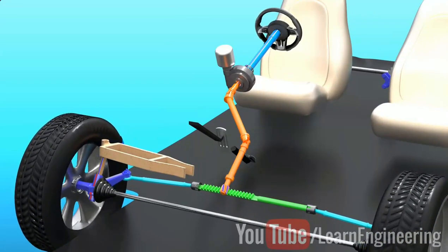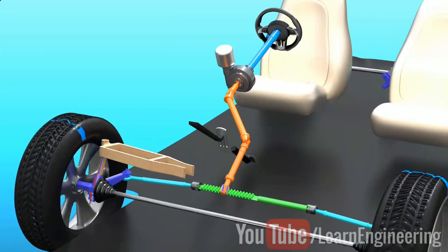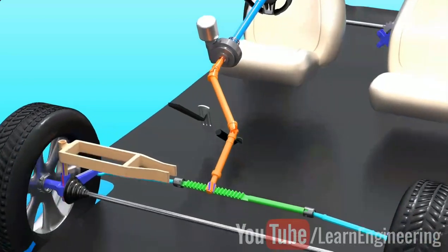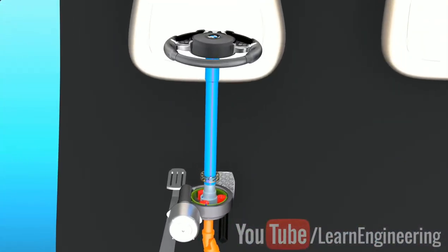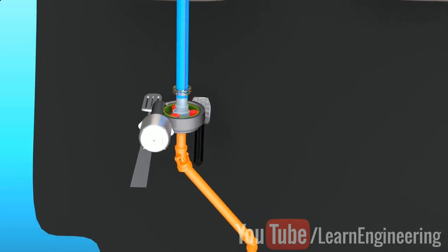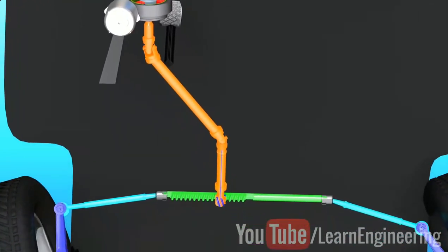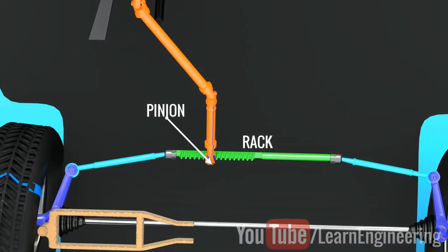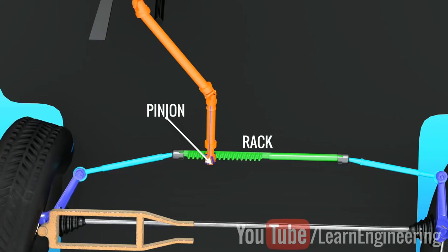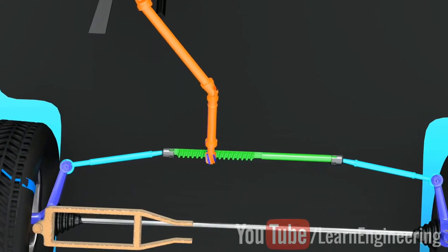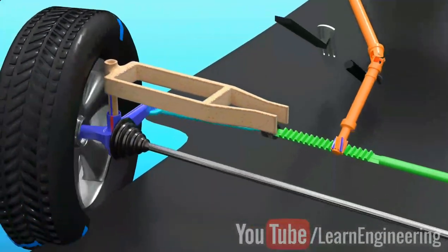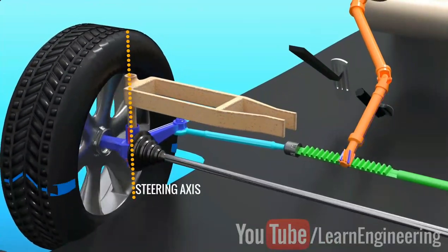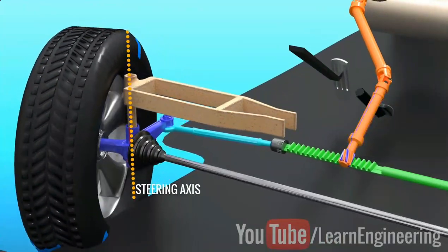We will see the steering wheel in the car. If we rotate the steering wheel in the car, we will go to the rack and pinion mechanism. The steering wheel in the car can turn on a particular axis. This is the steering axis.